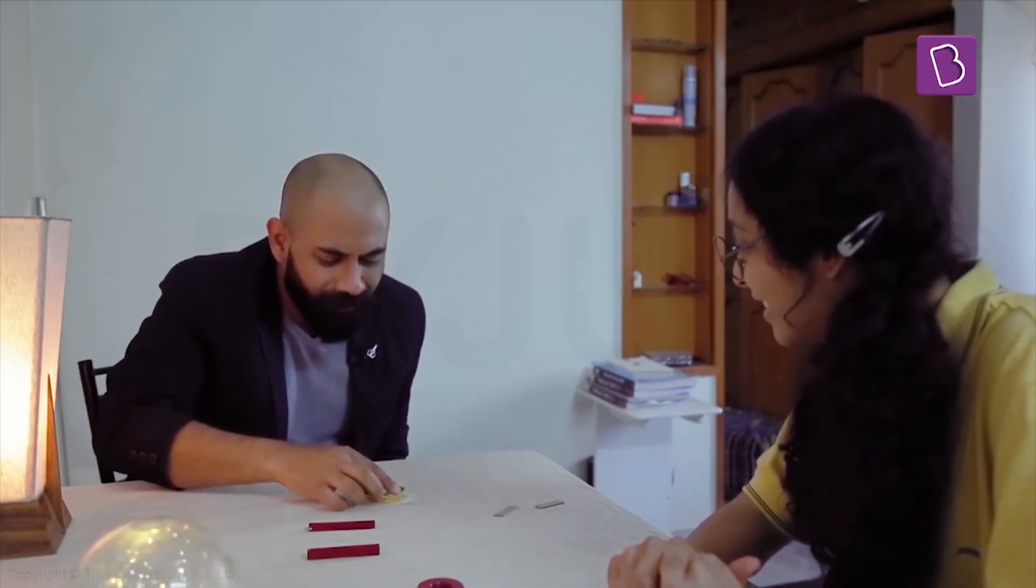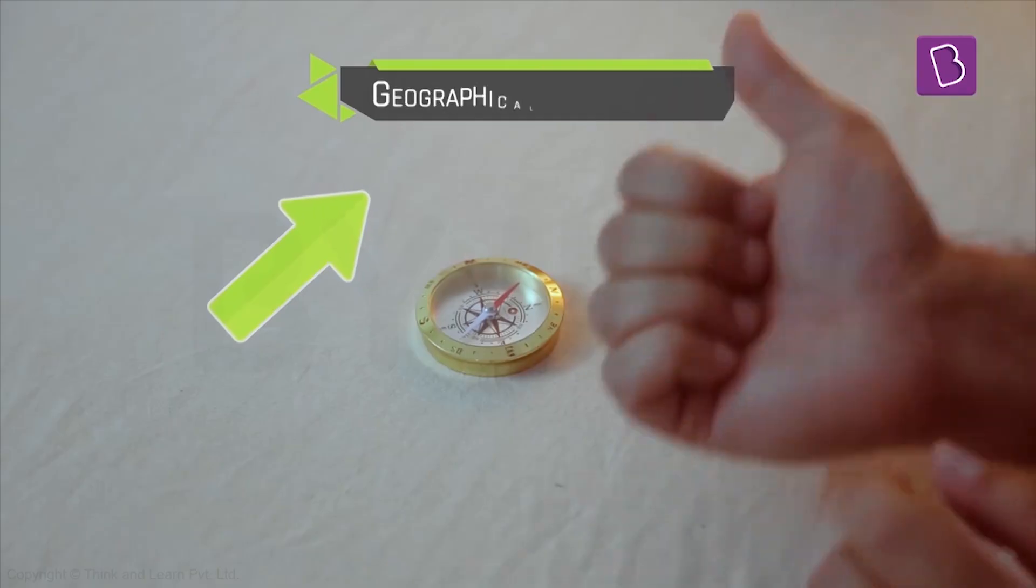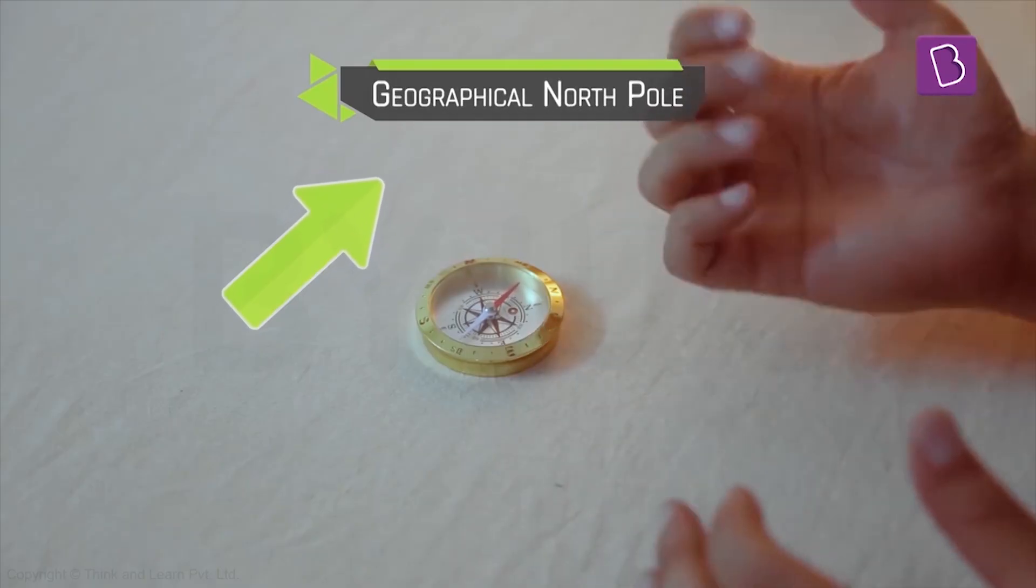So this compass, this needle over here is basically just a magnet. So you see that its red side is basically pointing towards the geographical north pole of the earth.